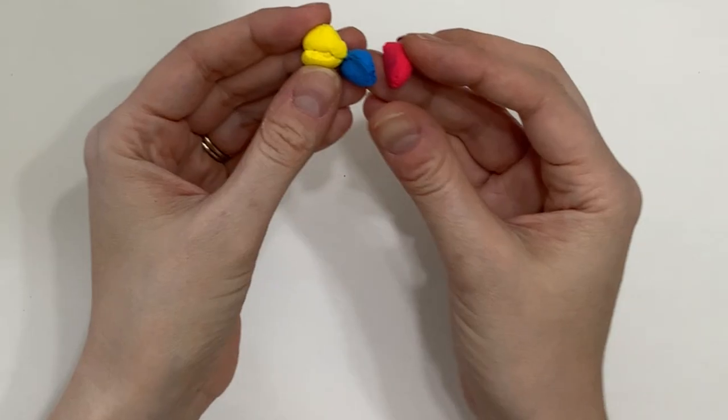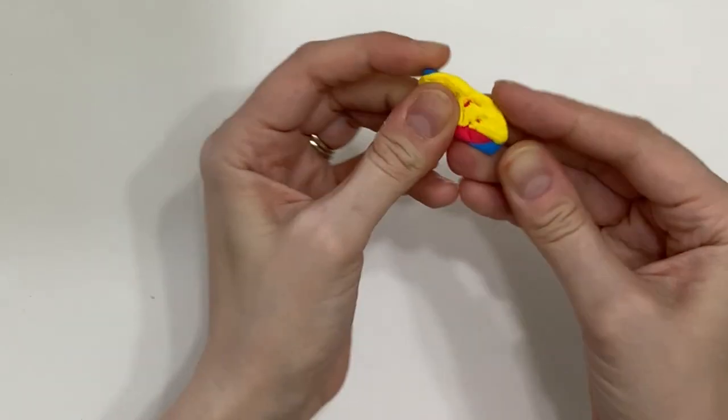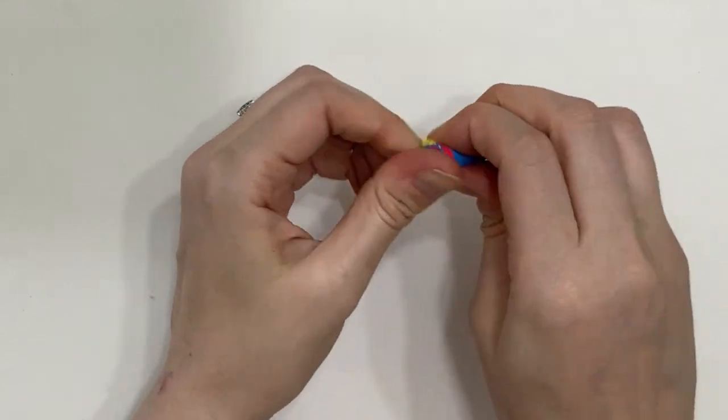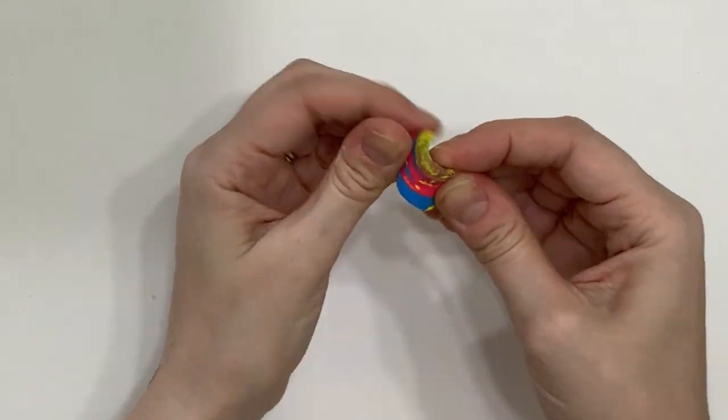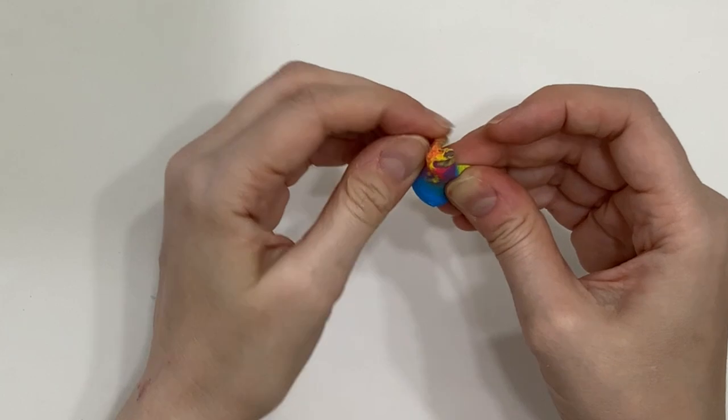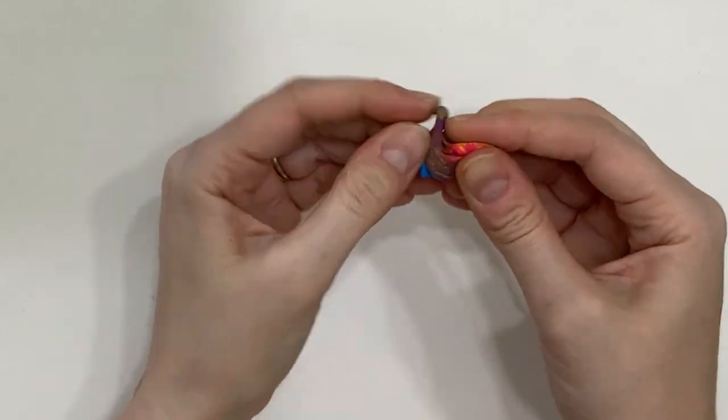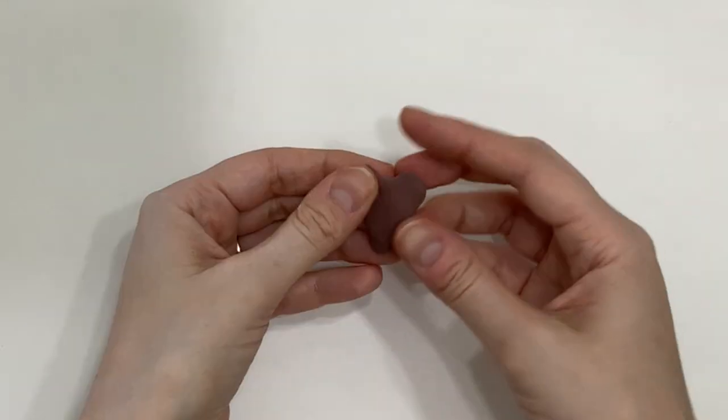Now you've learned how to make the color wheel, but let's talk about a couple colors that aren't on the color wheel. One of which is brown. Brown is created by mixing your three primary colors. If you want more of a dark chocolate color, use a little bit more blue.